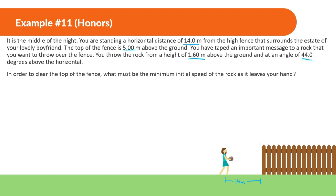The fence is a height of 5 meters — this is definitely not to scale. The rock is being thrown from a height of 1.6 meters, and the angle here is 44 degrees. We want this to barely make it over, so what is the minimum speed? We're looking for this initial velocity.